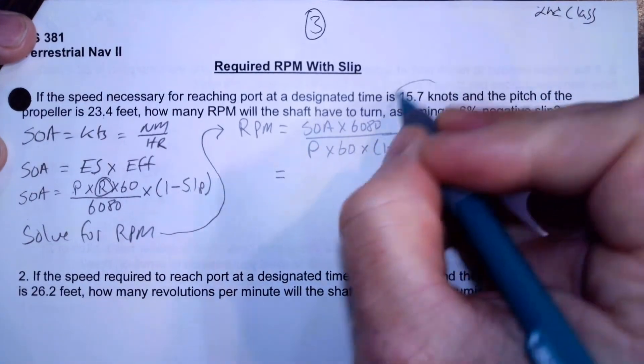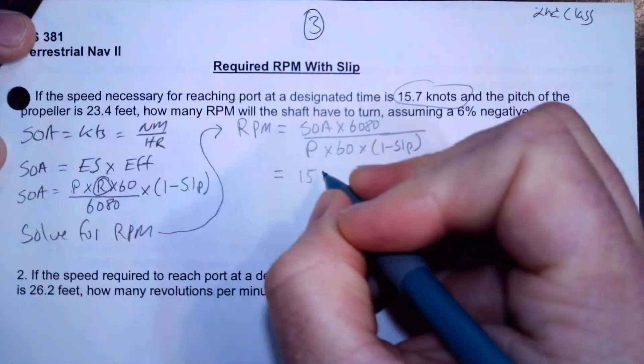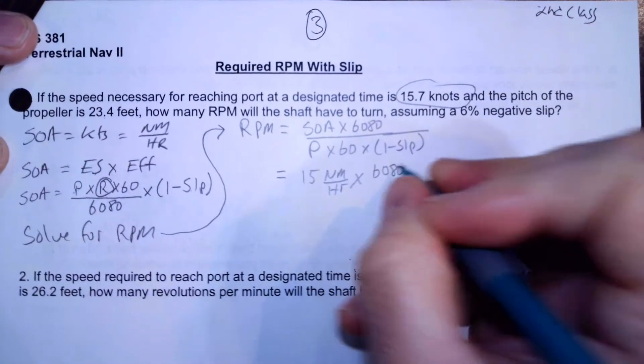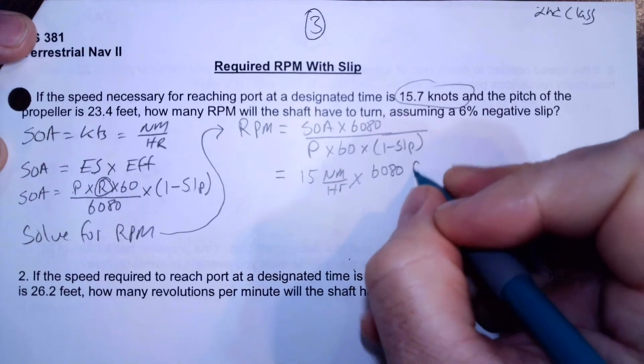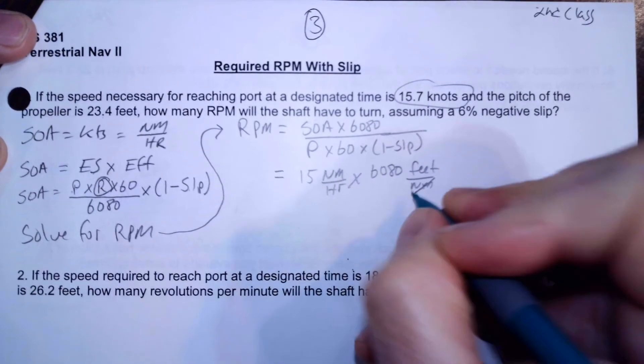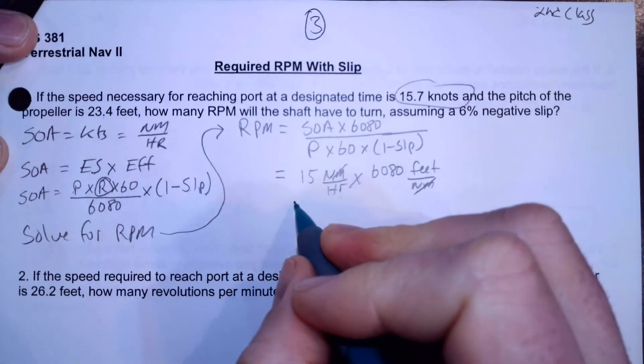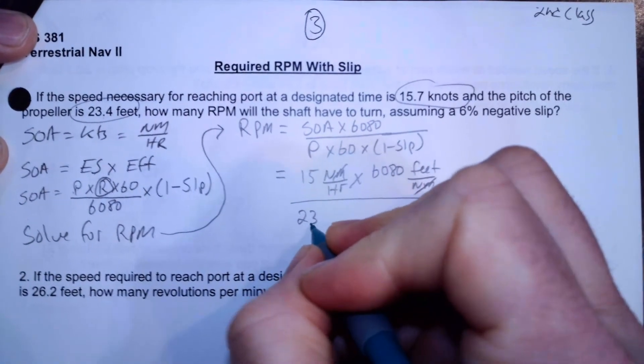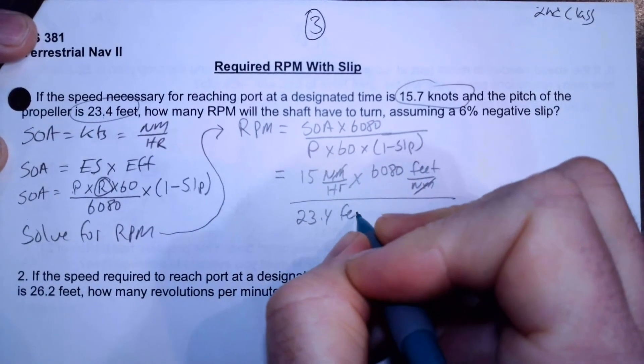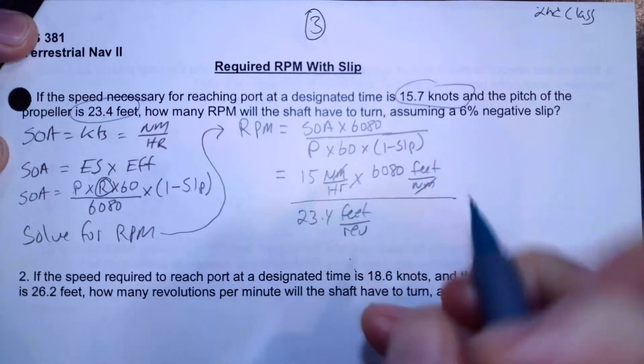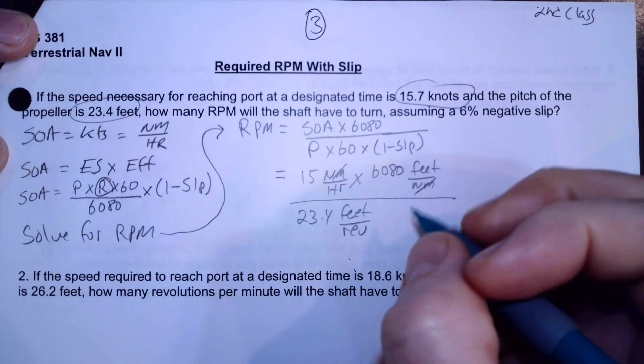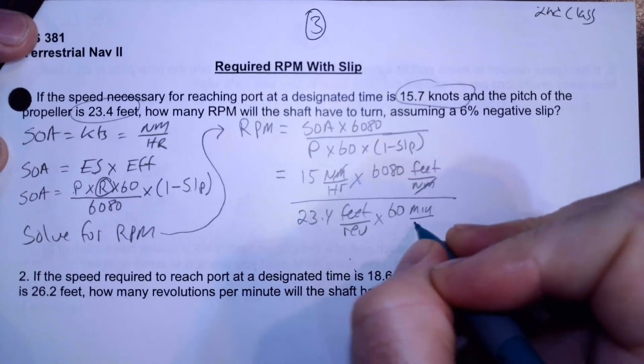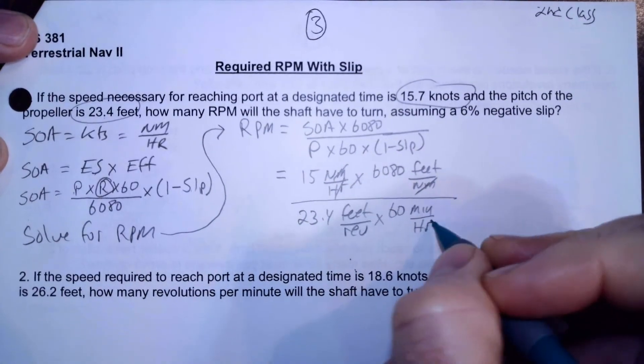So our speed of advance is 15.7 nautical miles per hour times 6080. That's 6080 feet per nautical mile, and you can see the nautical miles cancel out. Now I'm going to divide by pitch. That's 23.4 feet per revolution, and I'm going to need that because I'm going to have revolution. And then I'm going to multiply that by 60 minutes per hour, and now those two hours cancel out.